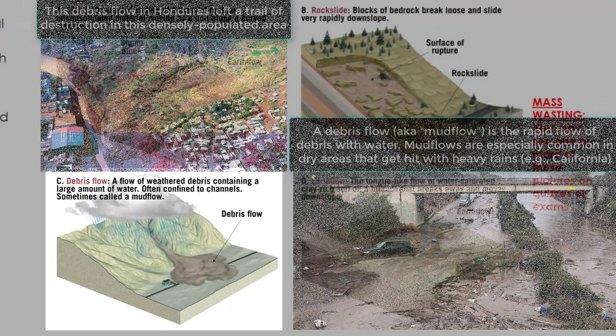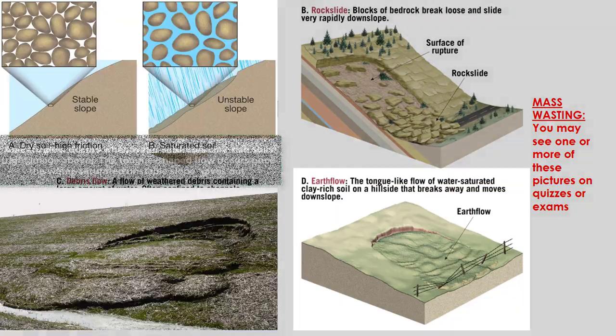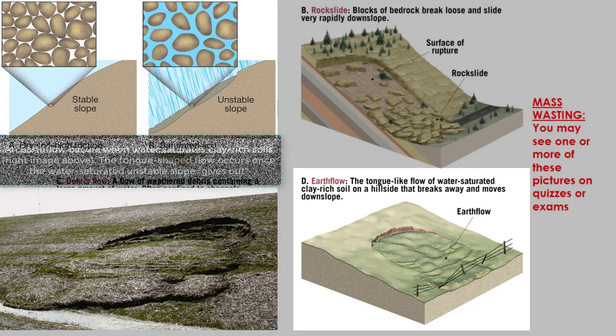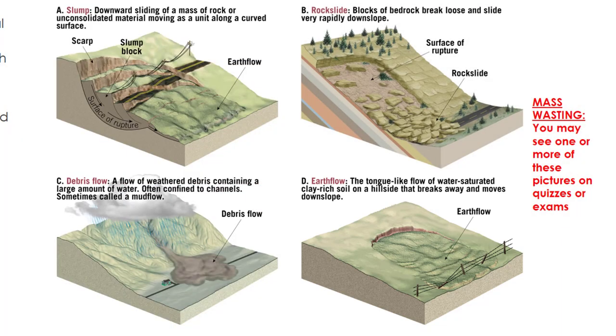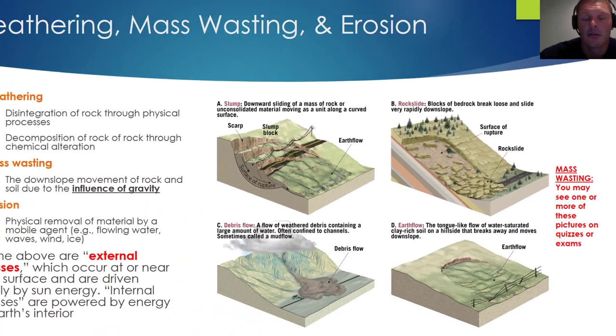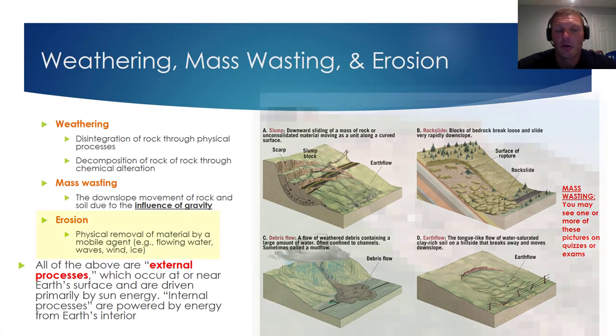The last example of mass wasting we'll consider is an earth flow. An earth flow is a tongue-like flow of water-saturated, clay-rich soil that occurs on a hillside. That tongue-like structure will break away and move in the downhill direction. A good way to remember it: when talking about mass wasting and you see the word 'flow,' it's ultimately water that's causing these particular mass wasting events.